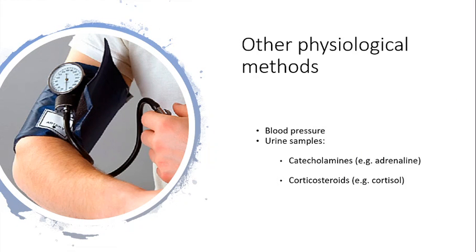There are other ways to measure stress too. One way is to look at blood pressure — high blood pressure is often linked to people who have been suffering from chronic stress. Equally, urine samples can be taken. These are all physiological methods. With urine samples, you measure the level of stress hormones present, which shows how much stress hormone has been circulating in the body over a particular time period.